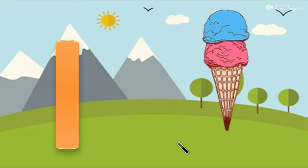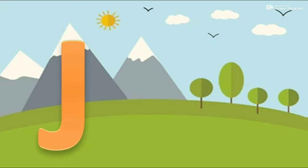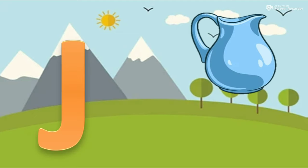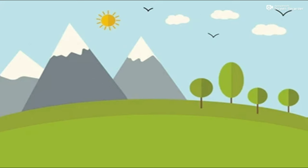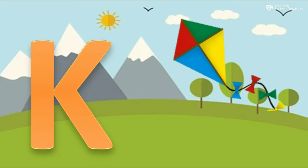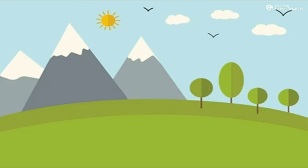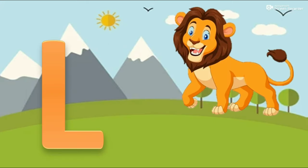I for ice cream. J for jar. K for kite. L for lion.